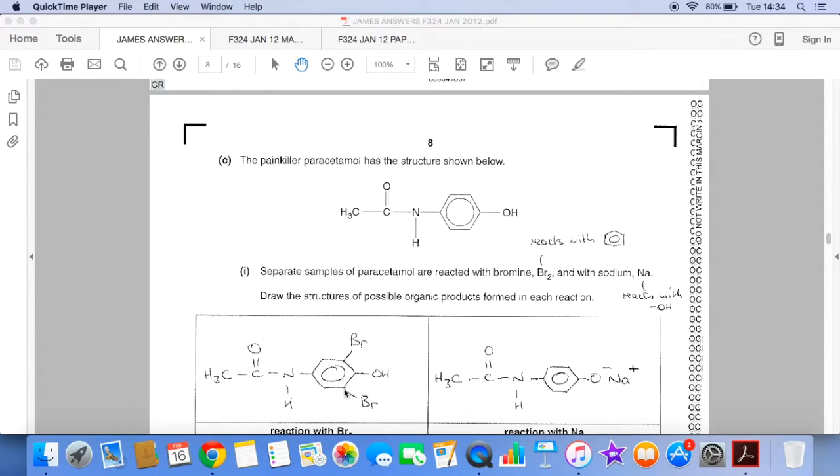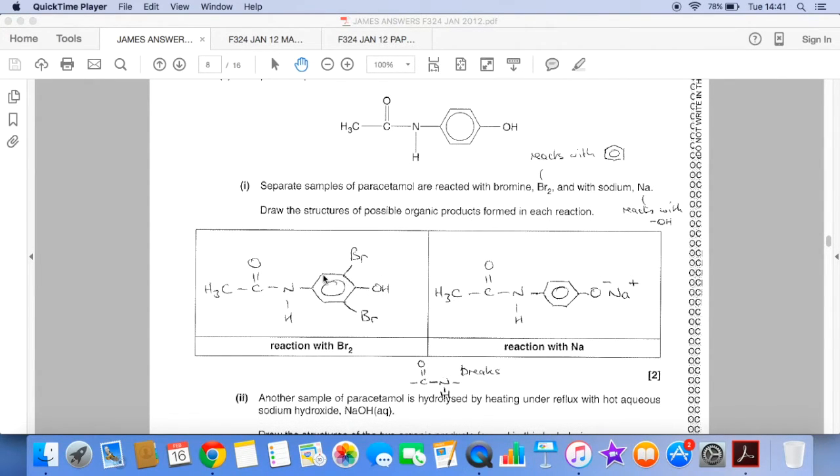So I've just gone for that. The mark scheme will actually allow up to four bromines on here. So you could actually fill all of the available positions with bromine, but I've tried to mirror what actually you would have in your notes with phenol and bromine. That's the only reason why I've gone for the structure that I've drawn.